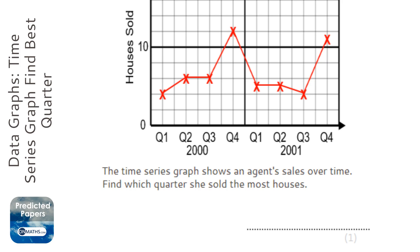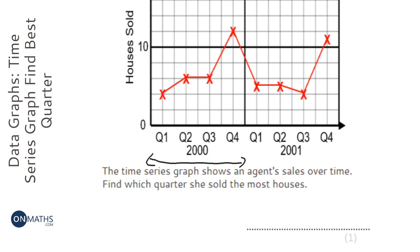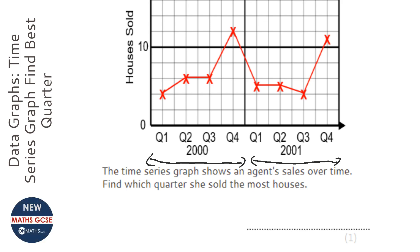This is showing the amount of houses that this person sold in 2000 and in 2001, and it's been split up into quarters. A quarter of a year — if it's 12 months a year, then a quarter of that will be three months, so it's every three months. You can see this one here came close to being the best, but this one here was the best.